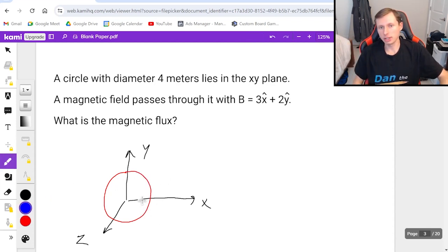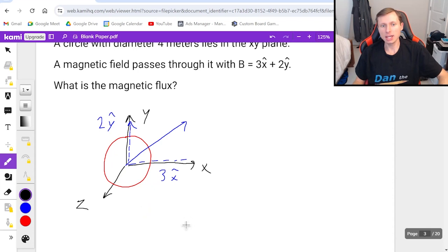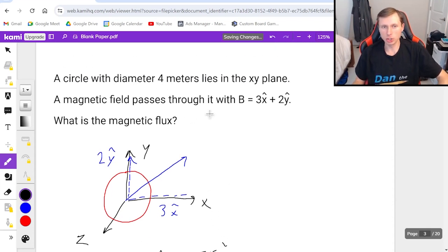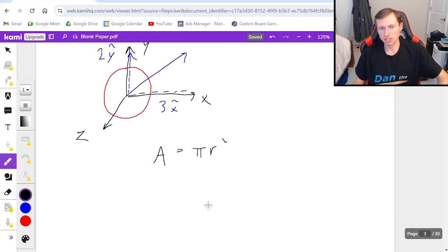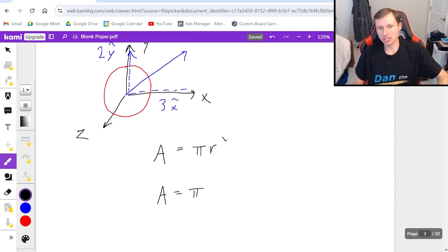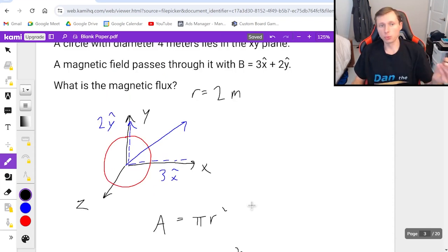The magnetic field is pointing 3x and 2y, which means that the magnetic field kind of looks something like this, where it has an x component of 3x hat and a y component of 2y hat. Now if I want to find the magnetic flux, I'll skip B for a second. A, the area is pi r squared, but I gotta divide the diameter by 2 because it's really radius 2 meters. So area is pi times 2 squared. Okay, fair enough.